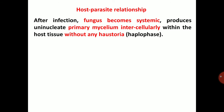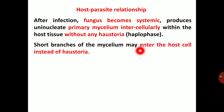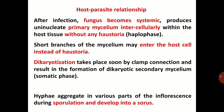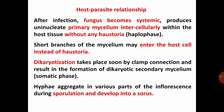Host-parasite relationship: after infection, the fungus becomes systemic and produces uninucleate primary mycelium intercellularly within the host tissue without any haustoria. Short branches of mycelium may enter the host cell instead of haustoria — so mycelium itself enters into the host cell. Dikaryotization takes place soon by clamp connections, resulting in the formation of dikaryotic secondary mycelium — that is the somatic phase. The dikaryotic hyphae aggregate in various parts of the inflorescence during spore formation and develop into a sorus.